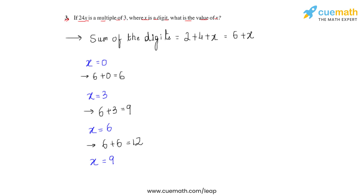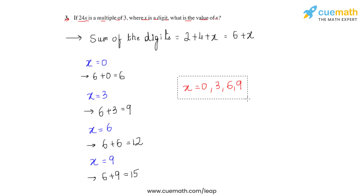For x = 9, the sum would be 6 + 9 = 15. Since it's already mentioned in the question that x is a single digit, we cannot assume any further values for x. Therefore, the different values of x would be 0, 3, 6, and 9. This is how we find these values of x and answer the third question of this exercise.